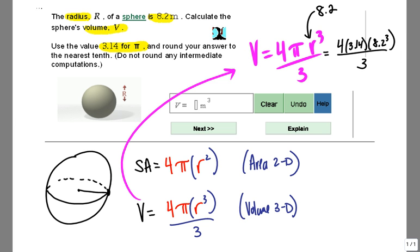Now the biggest mistake students often make is they simply multiply 4 times 3.14 times 8.2 and then cube. There's a problem there because it's only 8.2 that's going to be cubed. So I suggest you actually work from right to left in your calculator.